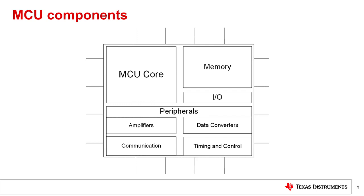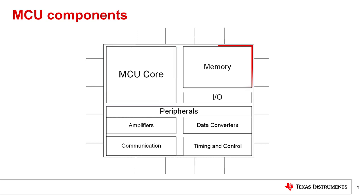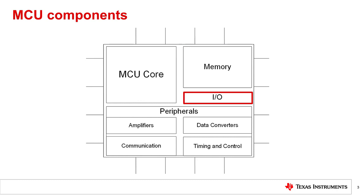The main components of an MCU are: the MCU core component, where everything is directed and controlled; memory, where instructions are found and data is stored; the IO component, which describes the physical pins of the device and their functionality; and the peripheral component, where modules assist the core in specific functions. This component is further broken down into subcomponents depending on functionality, which will be further explored in the video.